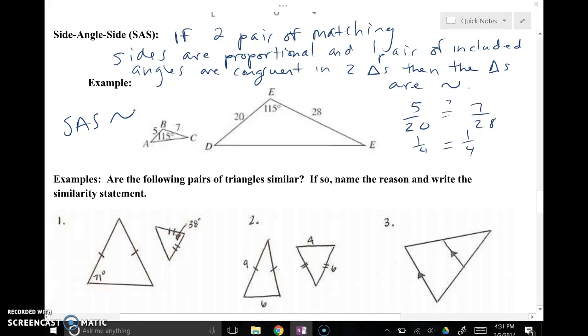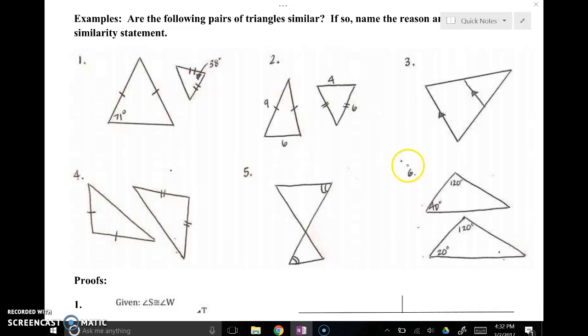So proving triangles similar, you have three shortcuts. Angle, angle similarity. Side, side, side similarity. Side, angle, side similarity. One example with you right here on number six. You can see that one-twenty and one-twenty are the same. Forty and twenty are not the same. So they would not be similar by angle, angle. So these are not similar.